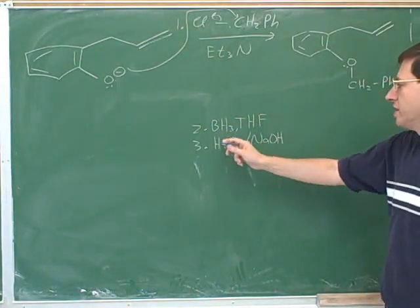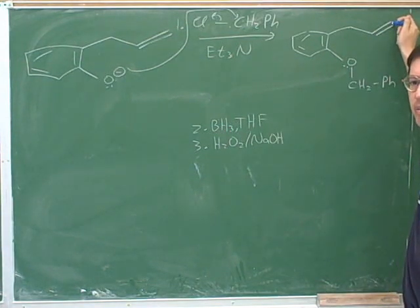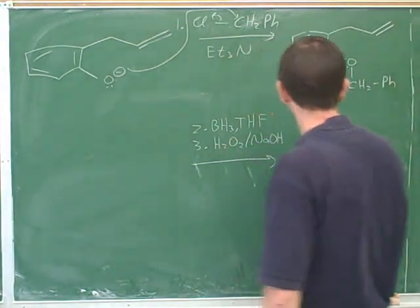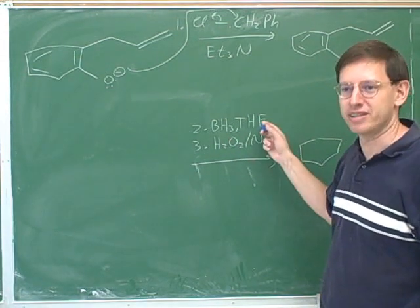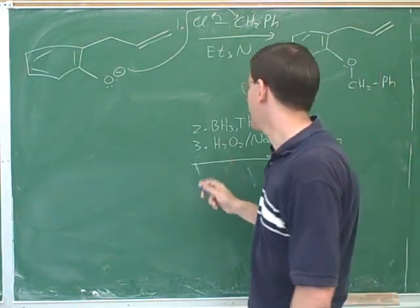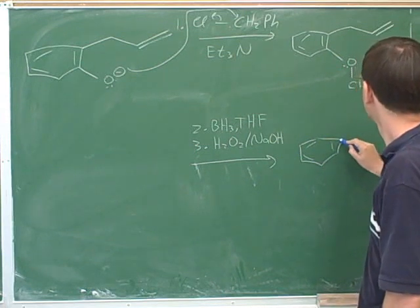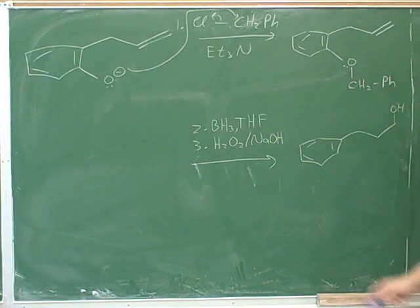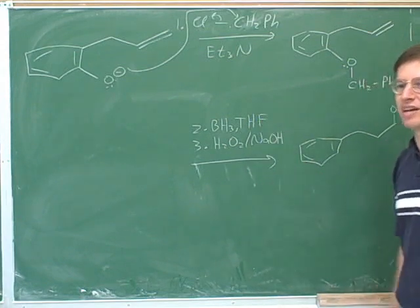Now we can do what we wanted to do all along — add the BH3 and H2O2 reagents. Remember from the earlier term: these perform an anti-Markovnikov hydroxylation of a double bond, putting the alcohol group on the less substituted carbon, which in this case is the terminal carbon. BH3 is borane — not borohydride, which would be BH4⁻. When you see BH3 followed by H2O2, you get anti-Markovnikov addition of OH to an alkene. There is a mechanism, but at this stage we'll simply memorize that it puts OH on the anti-Markovnikov carbon.